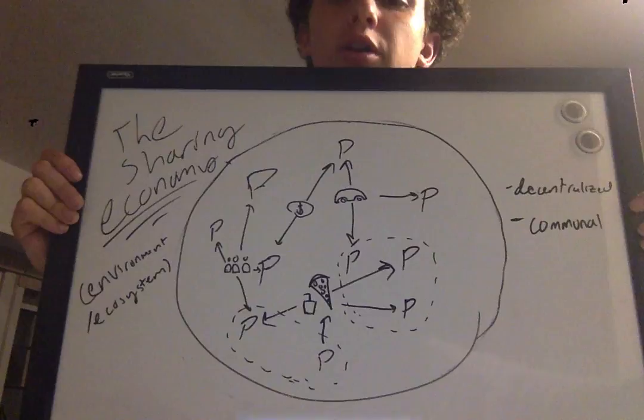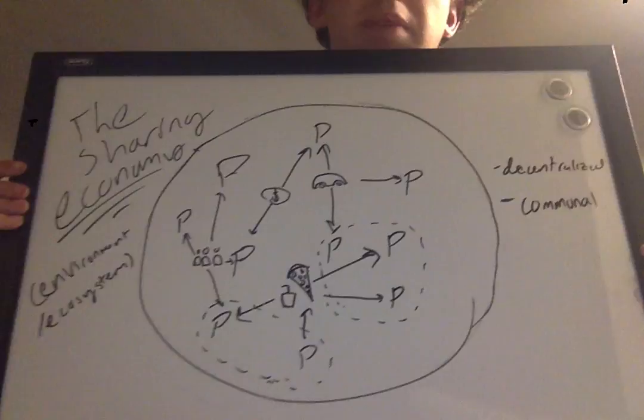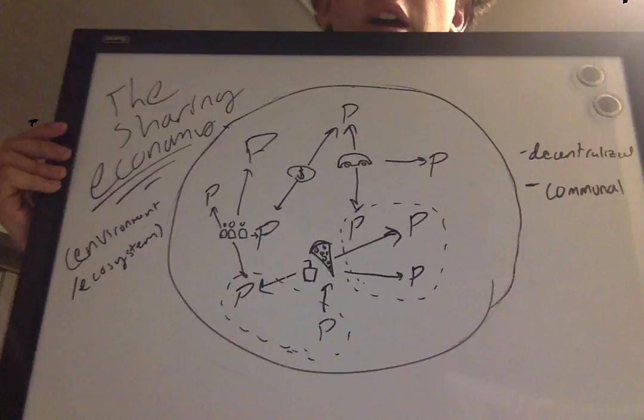What you can see here is that the benefits of the sharing environment are that it's communal, so you develop a very strong sense of community between all the people, which are represented by P's in this diagram, and it's decentralized, so you don't have any huge organizations like banks or food companies as much getting in your business.